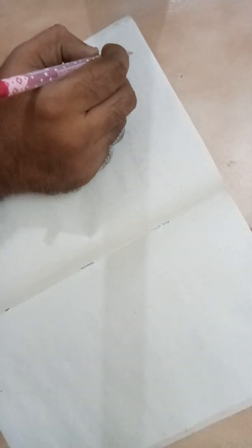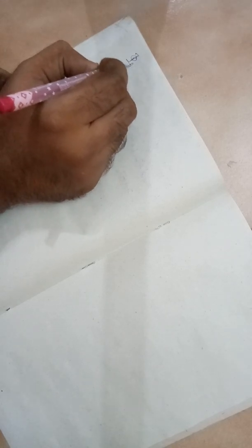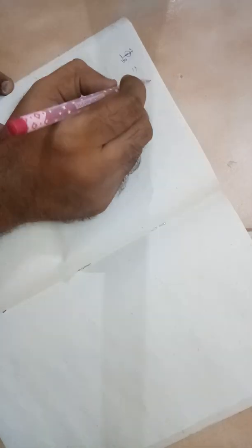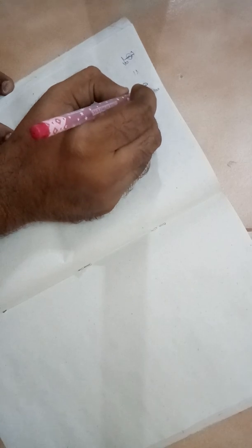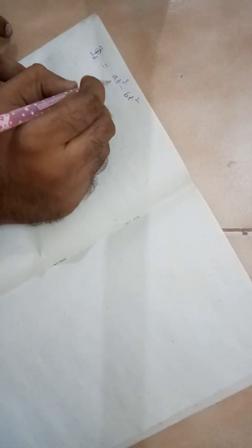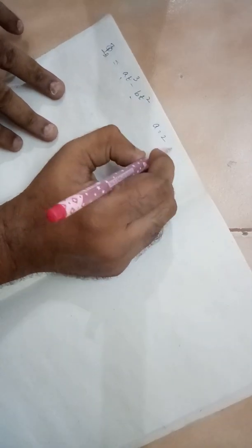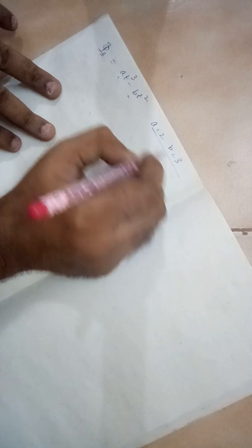Sometimes in numerical problems they give flux as a function of time. Let us say At cubed minus Bt squared, where A and B are constants. Let us take some values: A is equal to 2 and B is equal to 3.